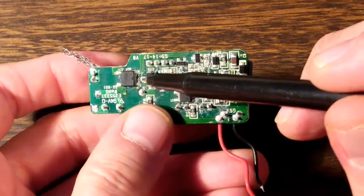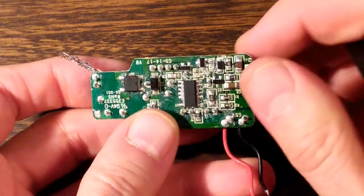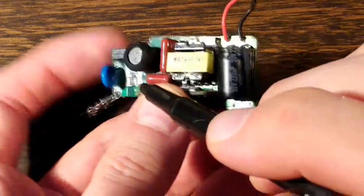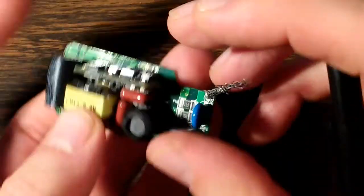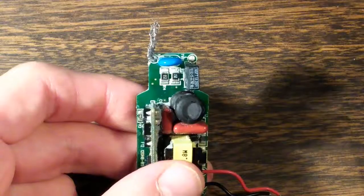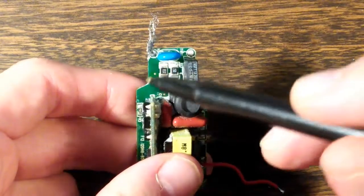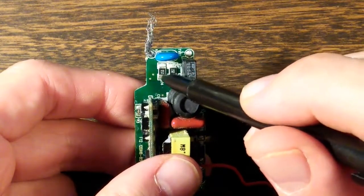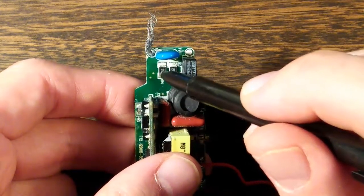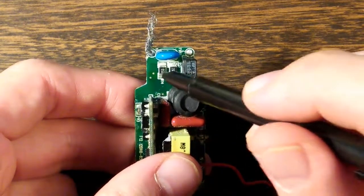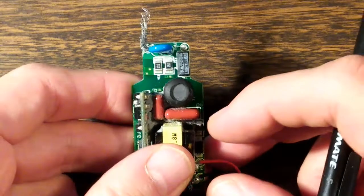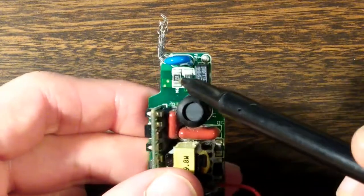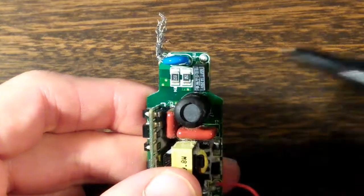Inputs there and there, output there and there. Leading into those inputs are these two resistors, two 150 ohm resistors. Now this one is not conducting. This resistor is open and that may be why this thing failed. If you look real close you can kind of see a little scar on it.